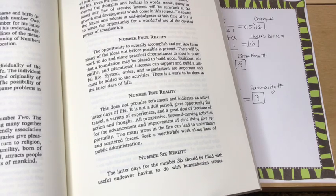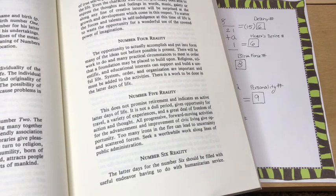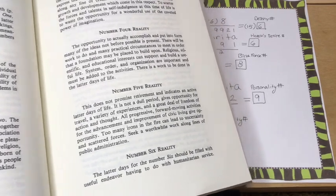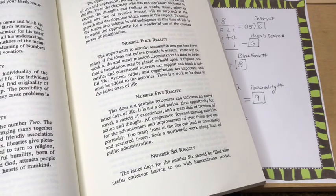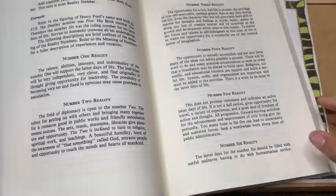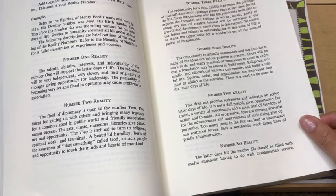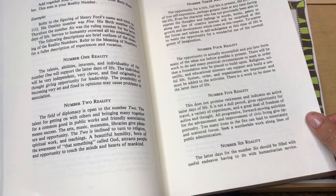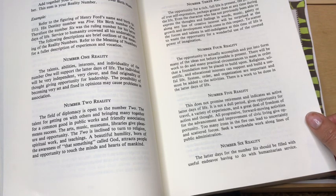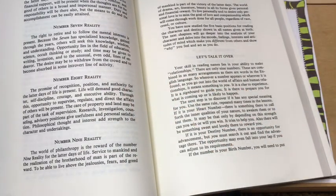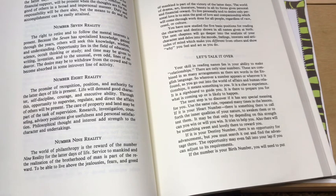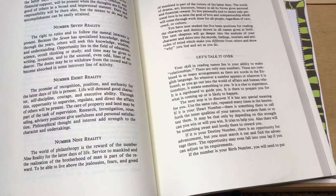This does not promise retirement and indicates an active latter days of life. It is not a dull period. It gives opportunity for travel and a variety of experiences, a great deal of freedom of action and thought. That's actually my real reality number. It's like, even when I make up a name, it seems that my numbers are the same. That's quite interesting.